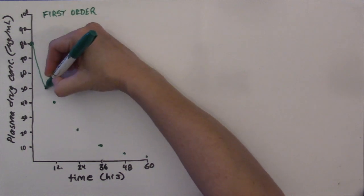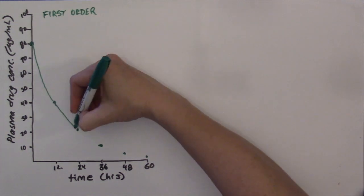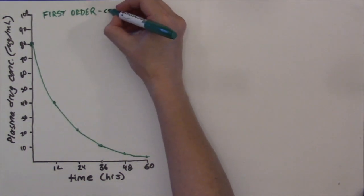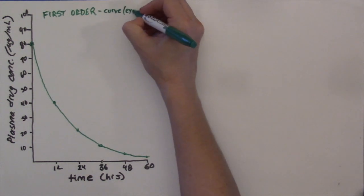When we look at the graph I've drawn, you can see that the line is curved, not linear.